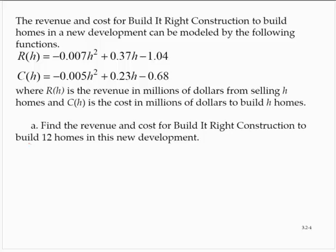The revenue and cost for Build-It-Right Construction to build homes in a new development can be modeled by the following functions, R of H and C of H, where R of H is the revenue in millions of dollars from selling H homes, and C of H is the cost in millions of dollars to build H homes.